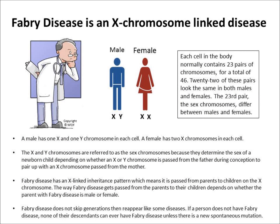To begin, the cells in our bodies each contain 23 pairs of chromosomes, which are packages of genetic information. 22 of these pairs look the same in males and females. The 23rd pair, the sex chromosomes, differ between males and females. A male's pair of sex chromosomes in each cell consists of one X chromosome and one Y chromosome. A female's pair of sex chromosomes in each cell consists of two X chromosomes.